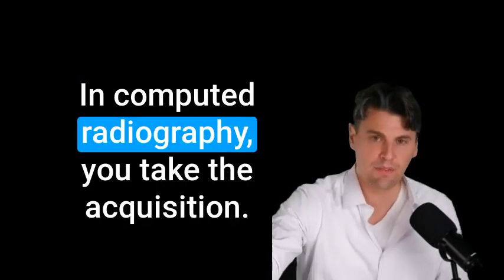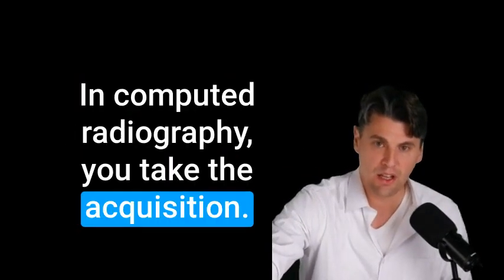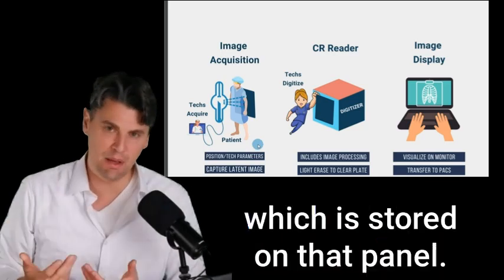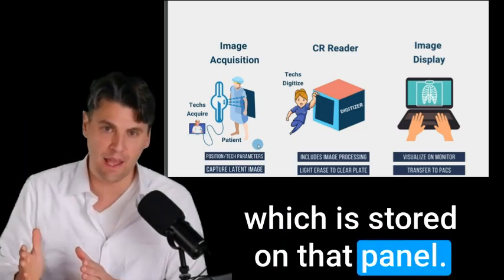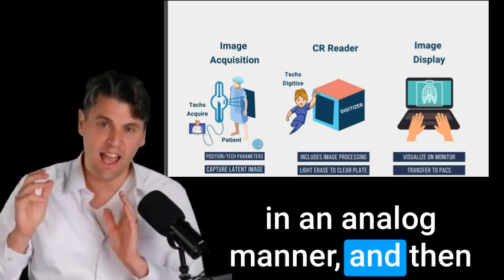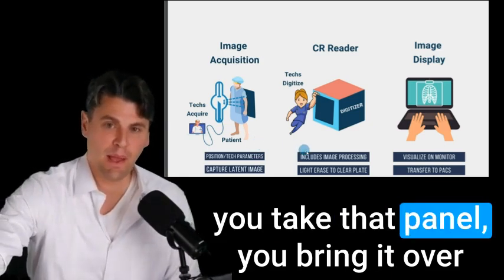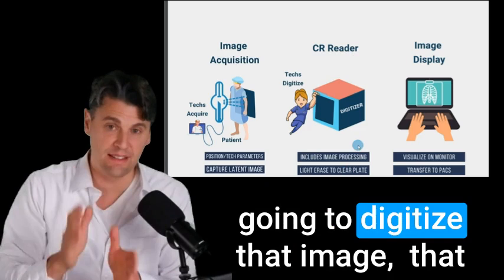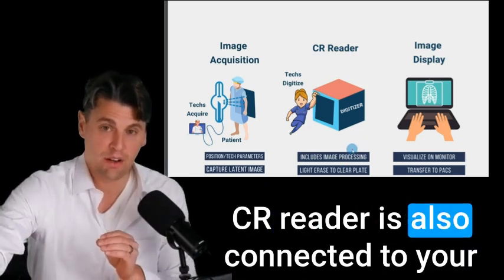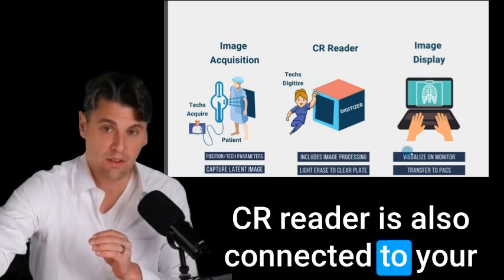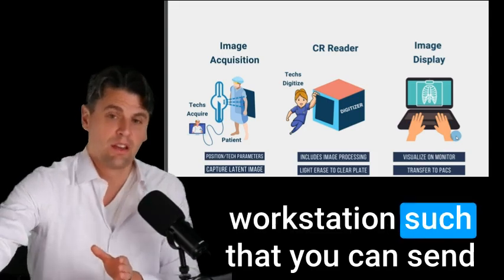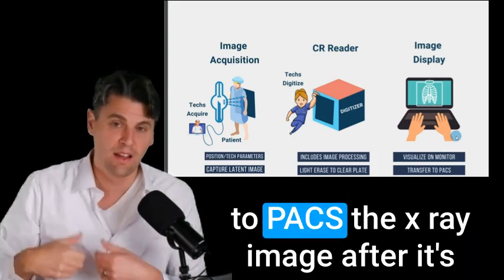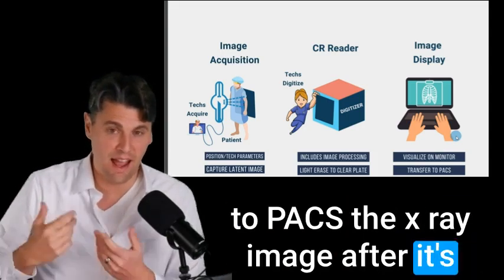In computed radiography, you take the acquisition. There's then a latent image, which is stored on that panel in an analog manner. And then you take that panel, you bring it over to a CR reader. That CR reader is going to digitize that image. That CR reader is also connected to your workstation such that you can send to PACS the x-ray image after it's been digitized.